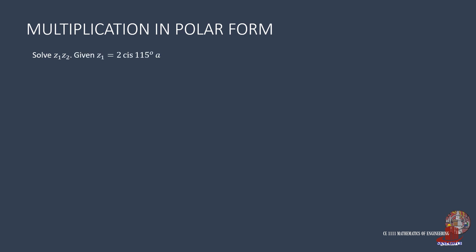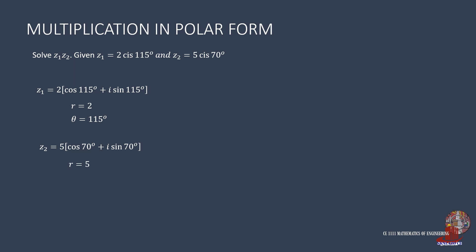The second example requires the product of two complex numbers: 2 CIS 115 degrees and 5 CIS 70 degrees. CIS is short for cosine plus i sine, which shortens the complex number notation. Thus, the first complex number is 2 times cosine of 115 degrees plus i sine of 115 degrees, where r is 2 and theta is 115 degrees. The second is 5 times cosine of 70 degrees plus i sine of 70 degrees, where the modulus is 5 and the argument is 70 degrees.